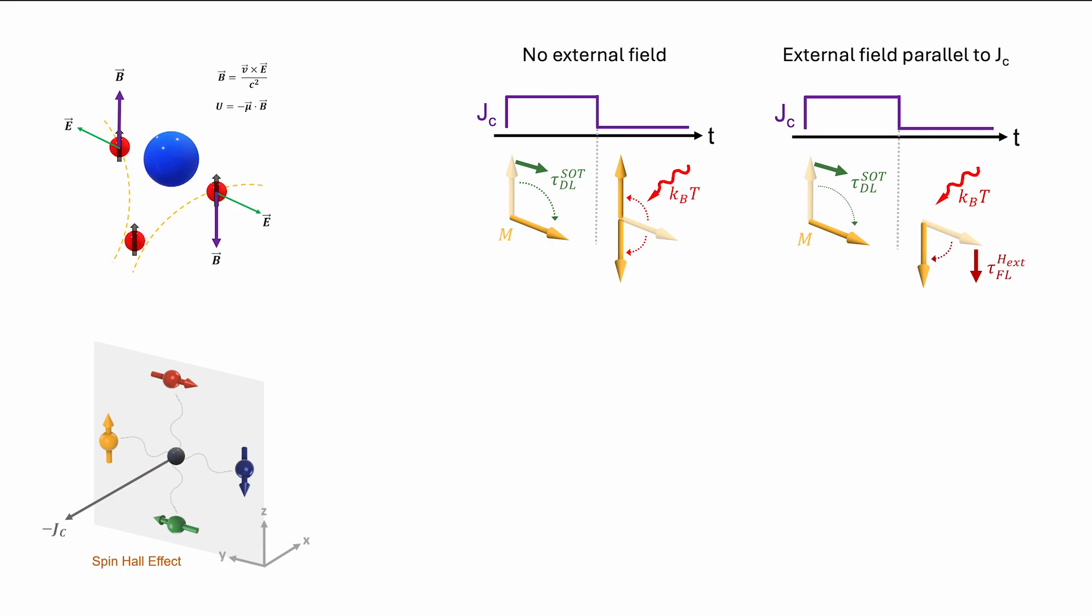To eliminate the need for an external magnetic field, the spin current generated through the spin-Hall effect must also contain out-of-plane spin components. Such out-of-plane spin components, however, are prohibited by symmetry.